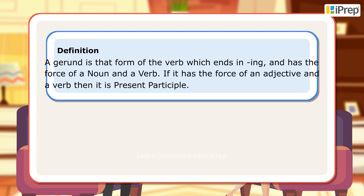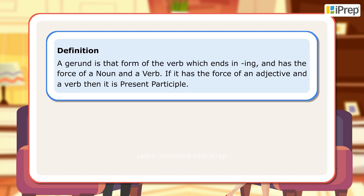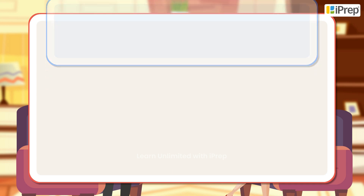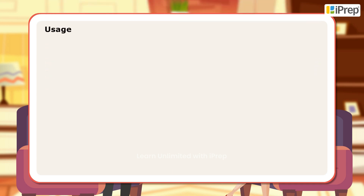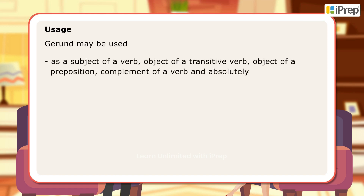Definition: A gerund is that form of the verb which ends in ing and has the force of a noun and a verb. If it has the force of an adjective and a verb, then it is a present participle.